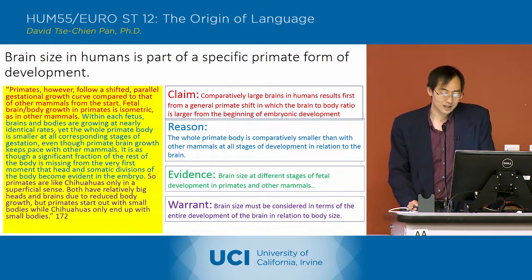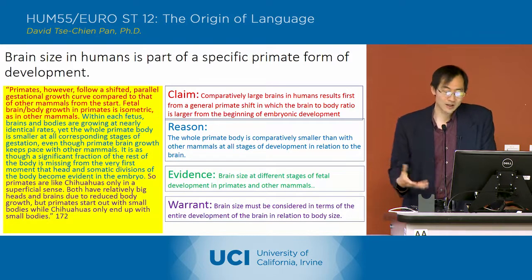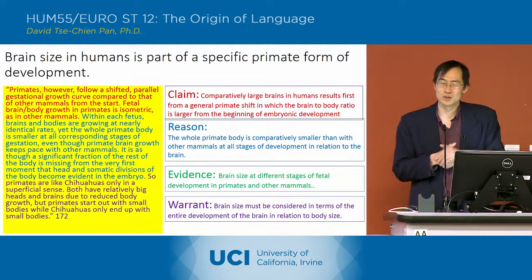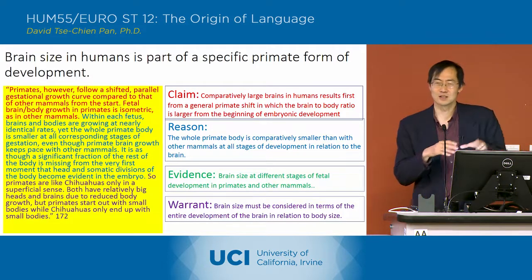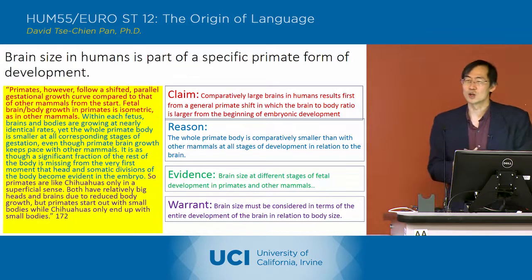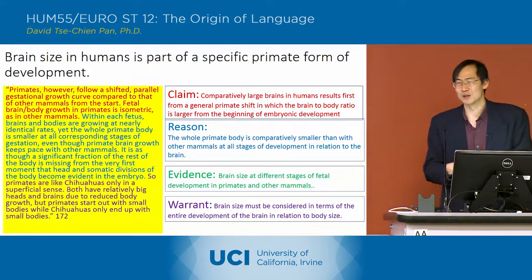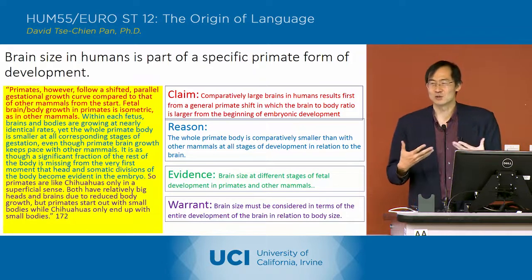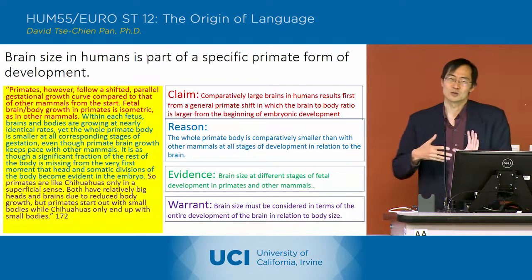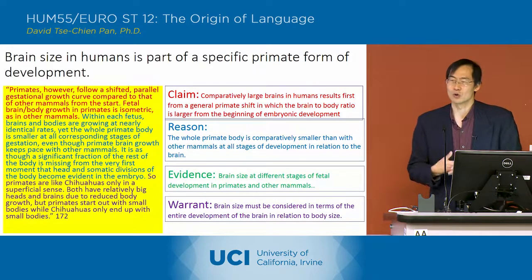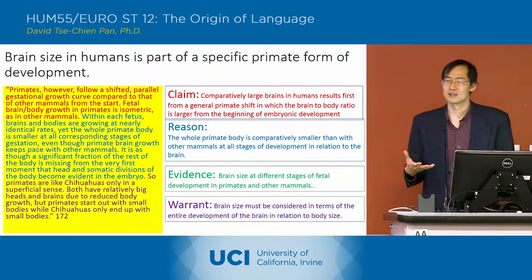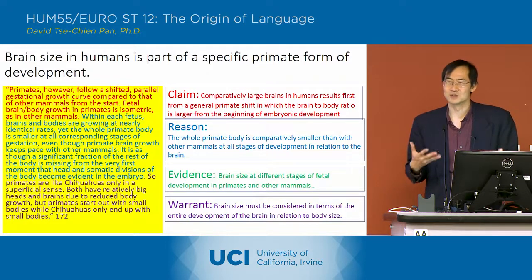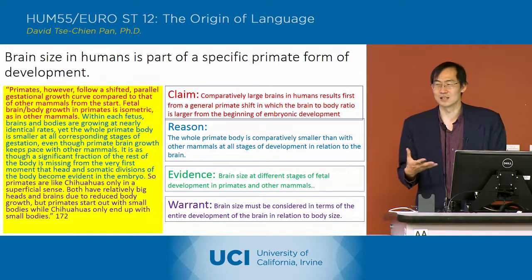There's a shift in the ratio of brain size to body size in primates that is larger from the very beginning of embryo development. The issue is the comparative size of the brain relative to the body. The largest brains belong to elephants and whales, which have very large bodies, but that doesn't translate to more intelligence — it simply means more brain circuits are needed to manage a larger body's sensory-motor needs.